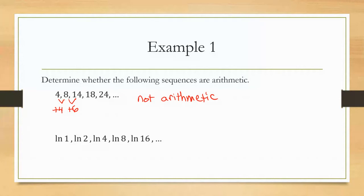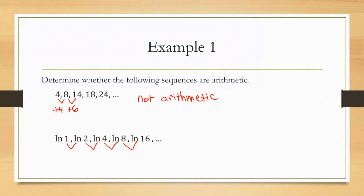For a sequence like ln(1), ln(2), ln(4), ln(8), ln(16), it's not obvious whether you're adding or subtracting the same thing each time. To determine that, you need to actually find the difference between each pair and check all of them — make sure the sequence doesn't change halfway through. This is where a calculator comes in handy.